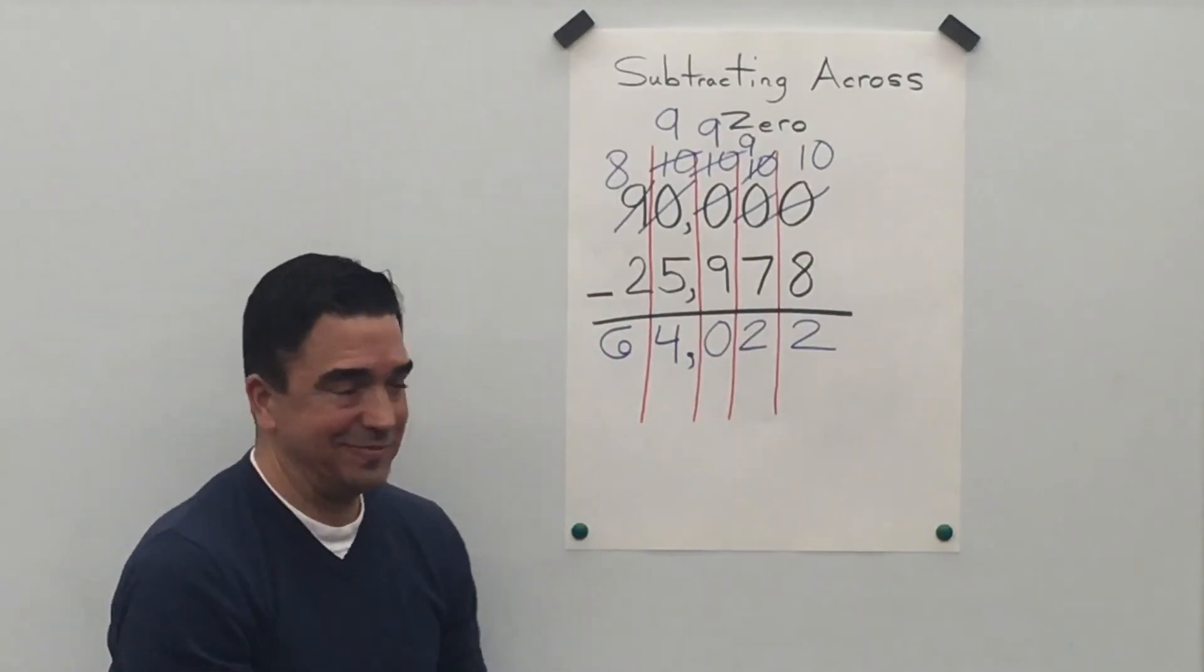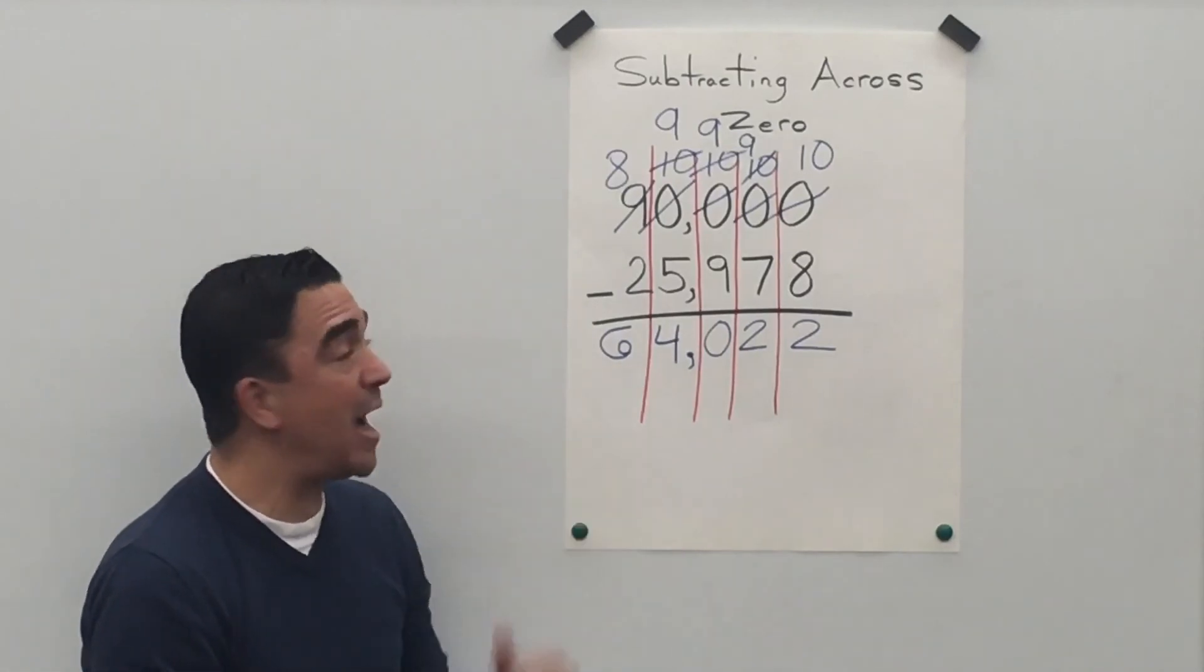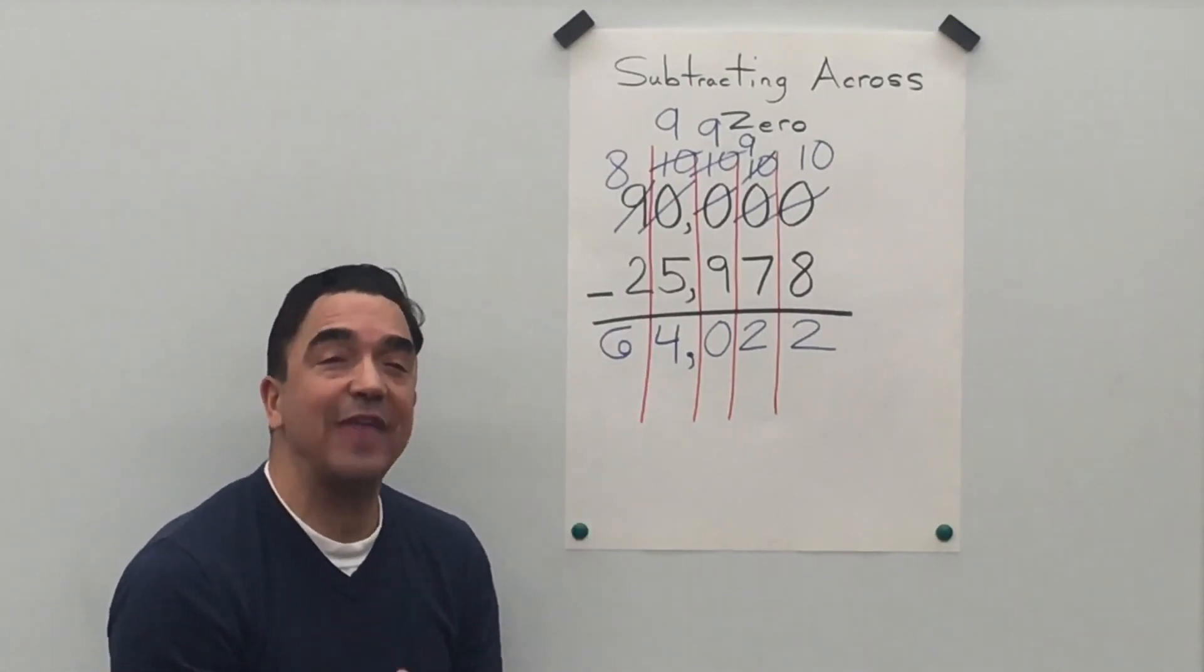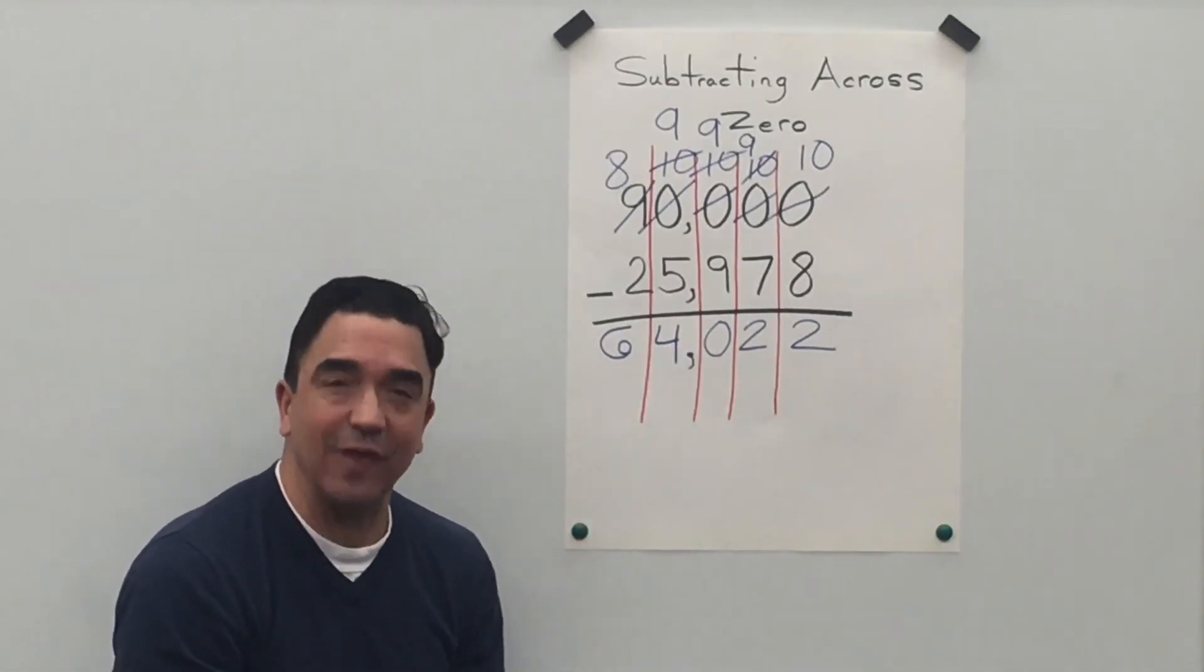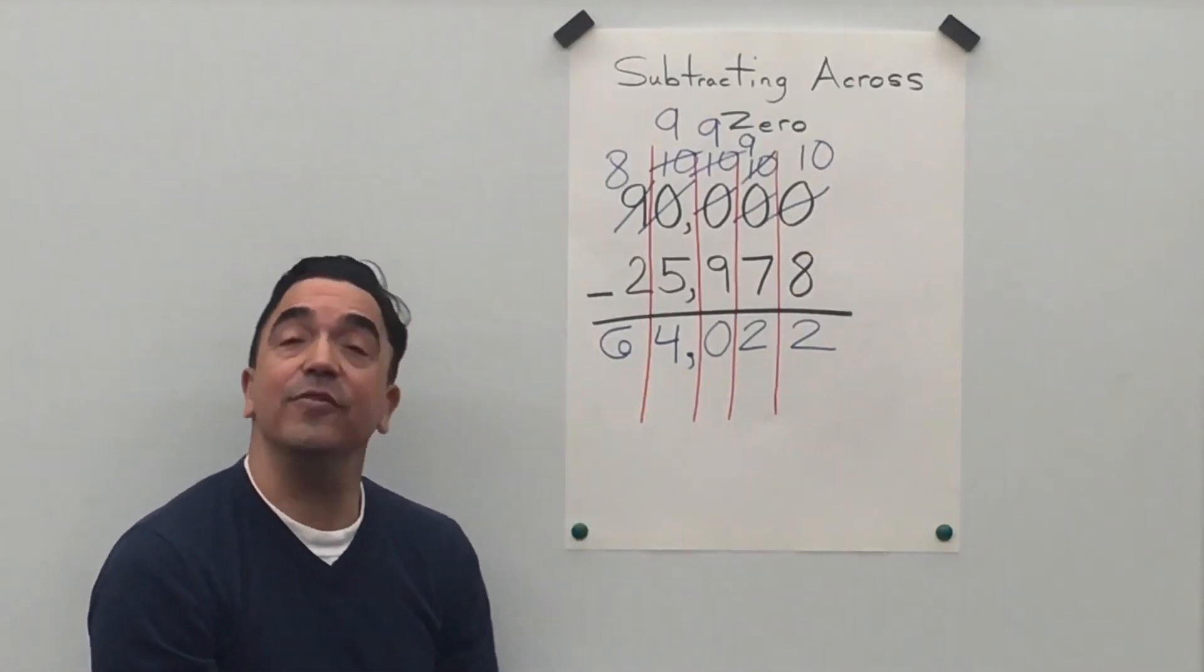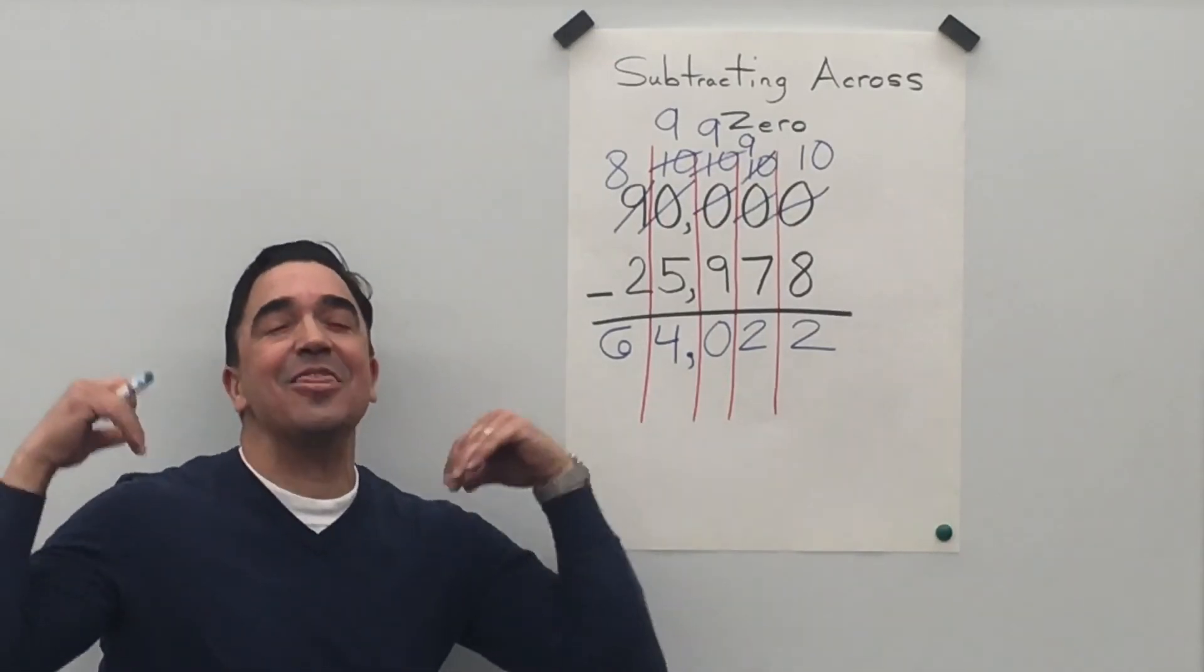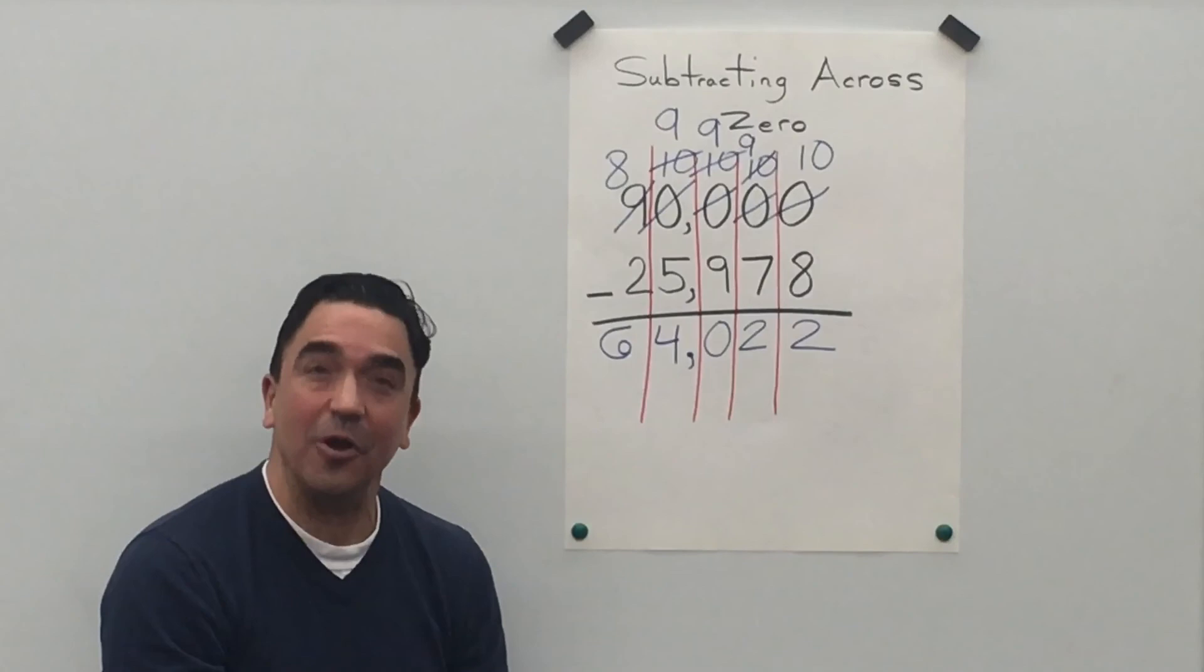So, 90,000 minus 25,978 gives us a difference of 64,022. And that concludes our lesson.